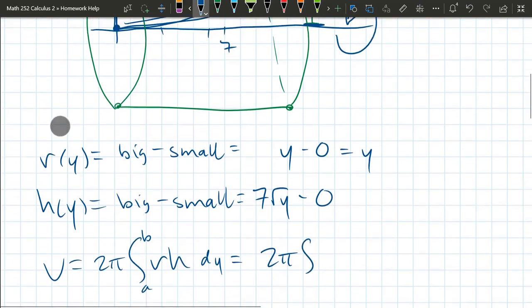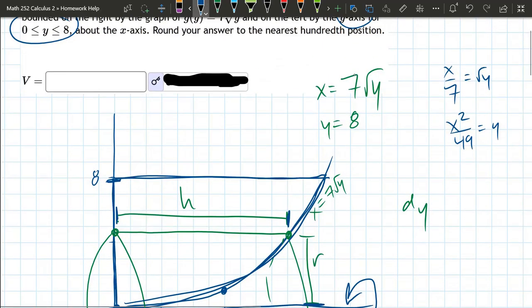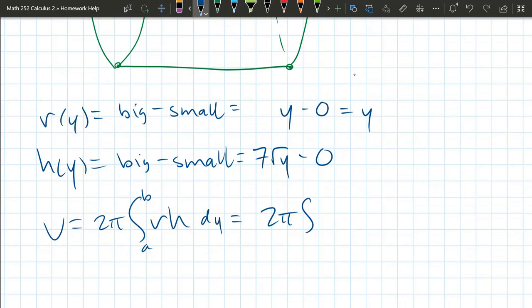These a and b are y values. So we're going from the bottom at zero up to eight. That was hinted at right here. So we're going zero to eight.